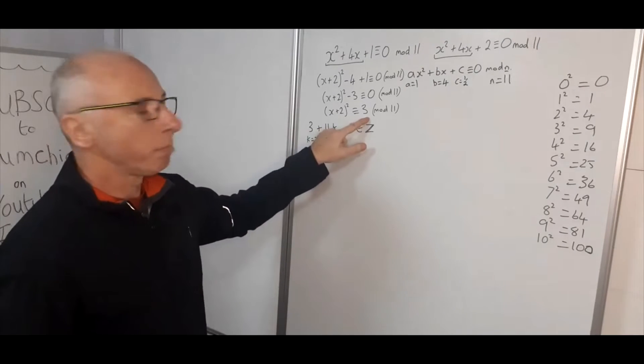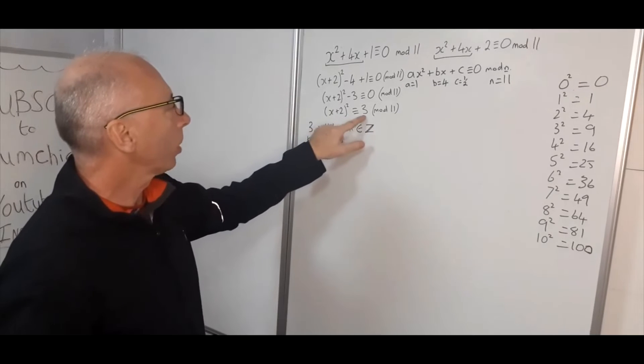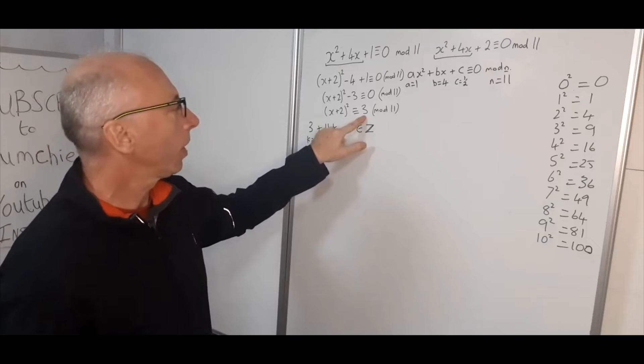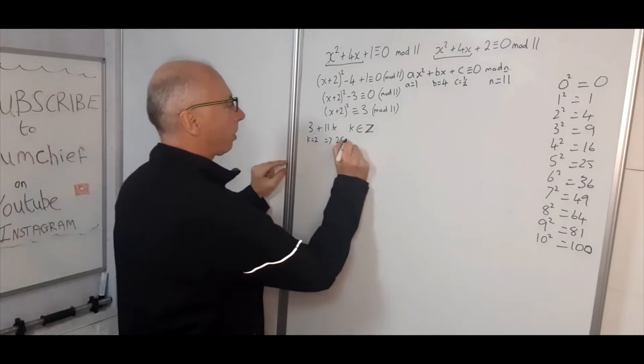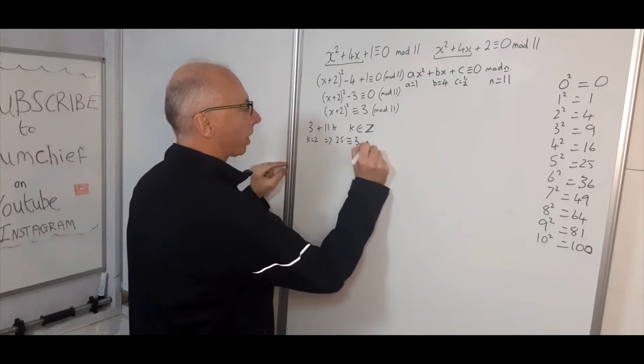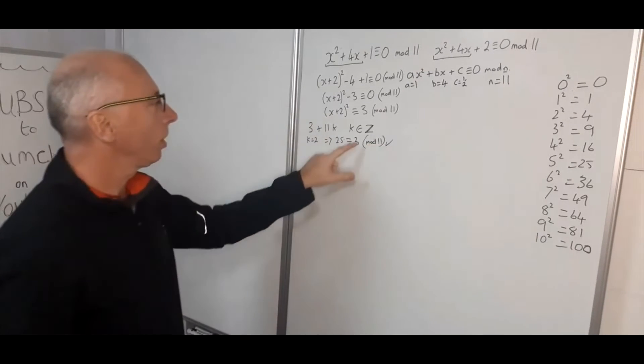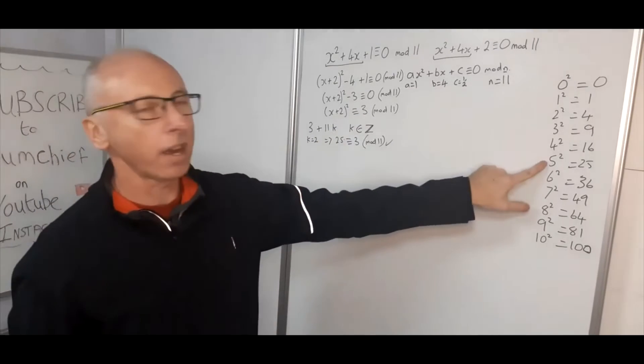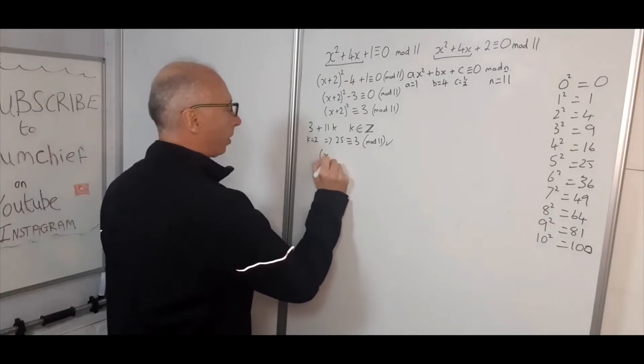So by the laws of modular arithmetic we can now plug in a 25 instead of this 3, and 3 is congruent with 25 mod 11. So 25 is congruent with 3 mod 11. So as that is good we can now plug in the 25 here. We can take a square root of 25 to give us 5. So that's going to help us.